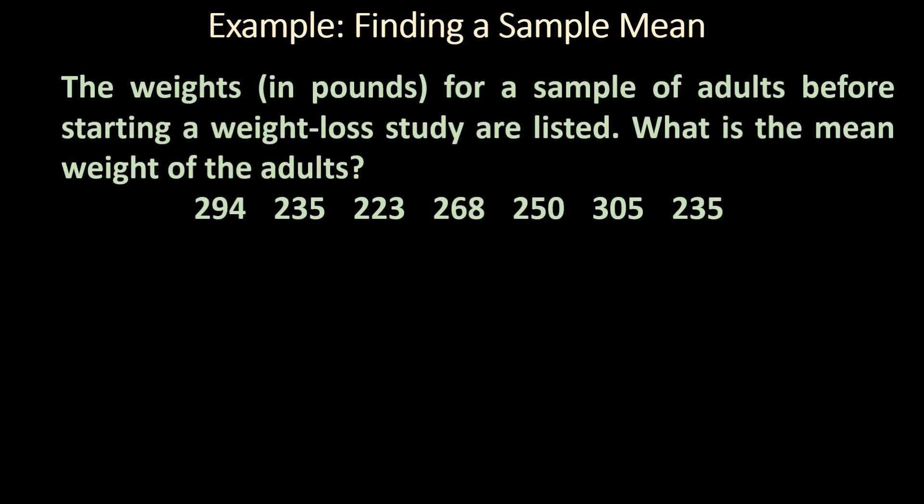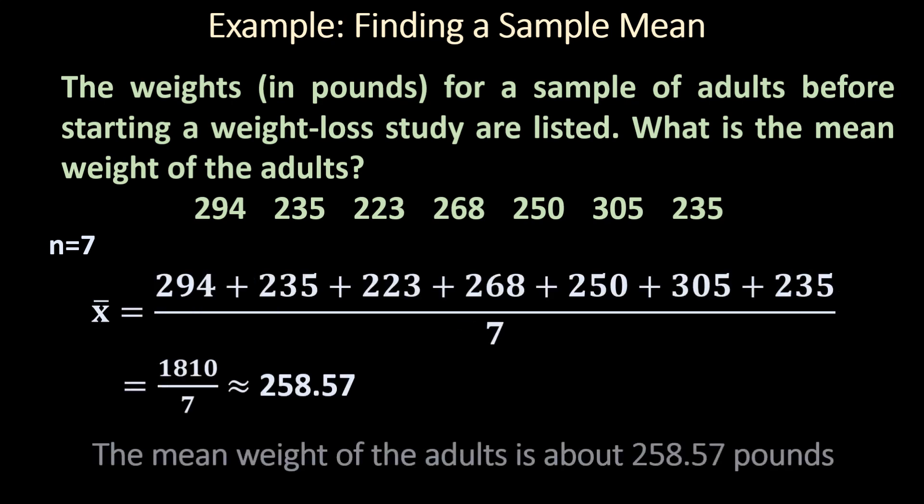Last example: the weights for a sample of adults before starting a weight loss study are listed. What is the mean weight of the adults? There are 7 observations. Add them together and divide by 7. That gives a mean of 258.57 pounds. I hope you understand how to find the mean.